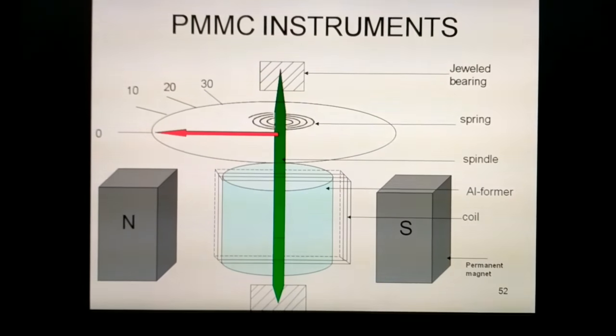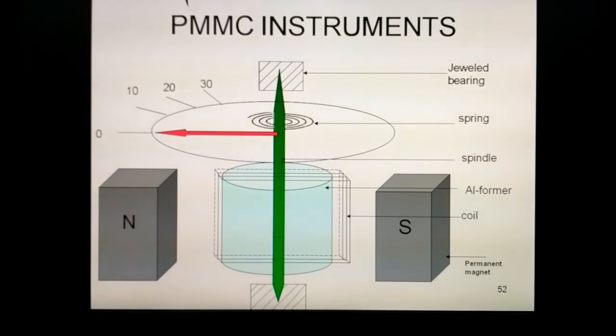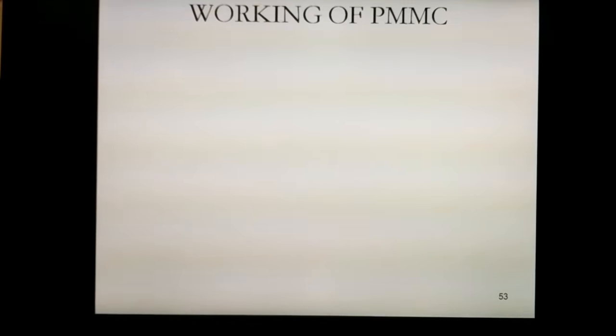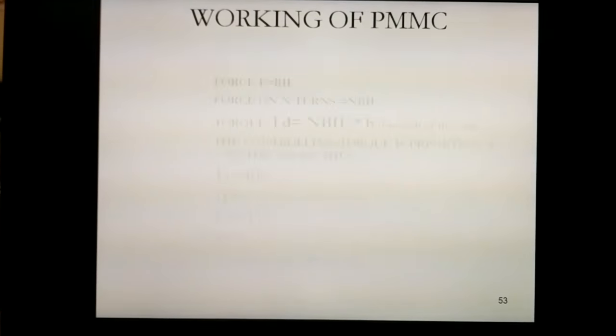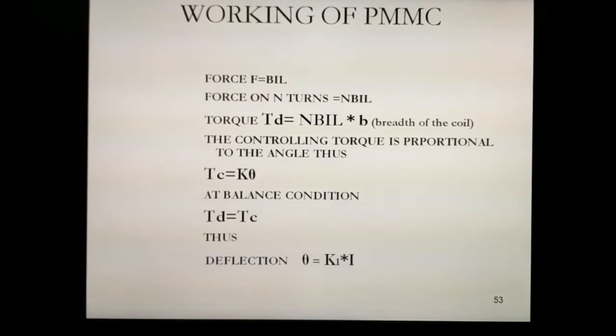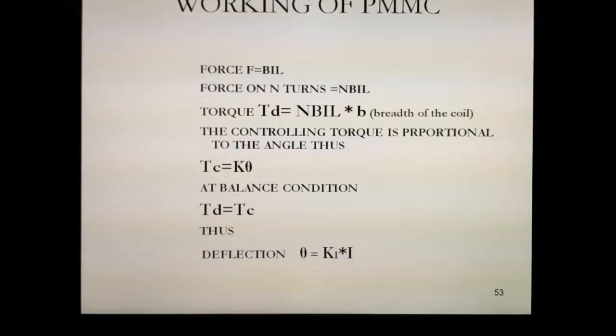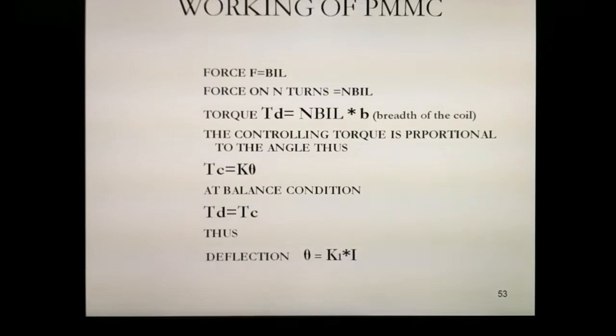Now we will go ahead and see the working of the permanent magnet moving coil instrument. Now see here, the force as I told you is exerted on the coil. The force is BIL, and for the N-turn coil, NBIL.